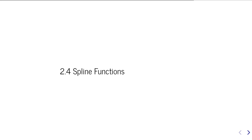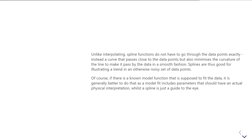The thing with splines is they are not incorporating any particular physics of what your data means. There's no understanding of why your data points are the particular shape they are - they're just treated as a set of data points. If you know that your data should be a Gaussian peak, a line, a parabola, or a tanh function, you should fit the data with that function rather than interpolating or using splines. But if you just have a set of data points and want a guide for the eye to show which data points go together, then a spline is your friend.